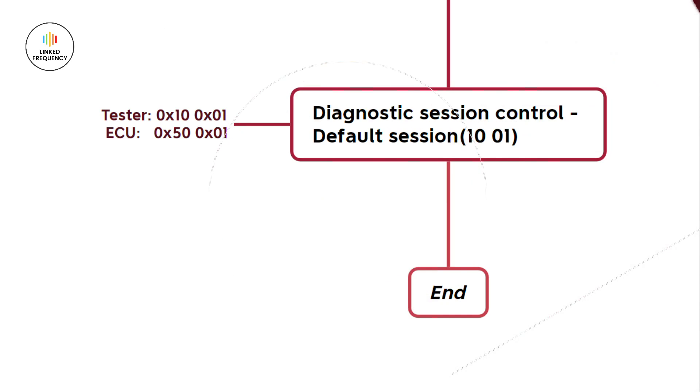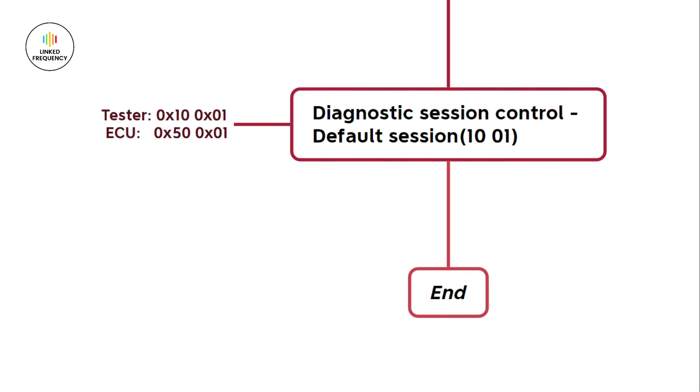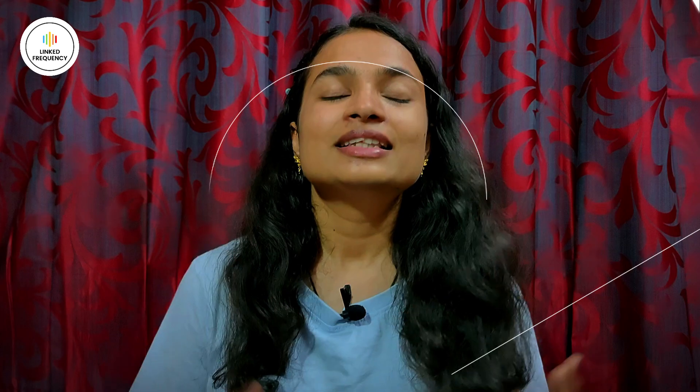Without any further delay, let's move on to our next step — Default Session, as highlighted on the screen. The Diagnostic Session Control, that is Default Session 10.01, is a UDS service request that tells the ECU to switch to its default diagnostic session. The purpose of using 10.01 in flash programming is as follows.